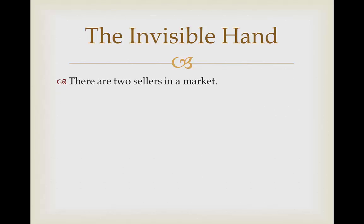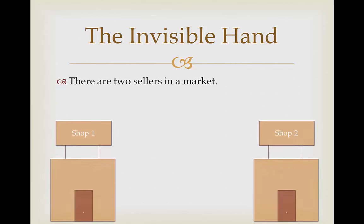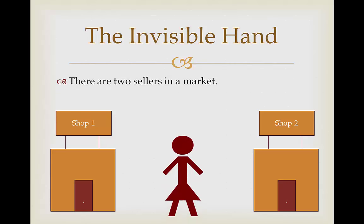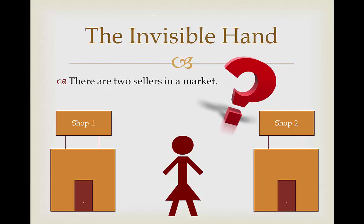So let's imagine there are two sellers in a market. We have shop one and shop number two. Now we'll put an economic agent or a consumer into this equation. So which shop is the economic agent going to buy from?